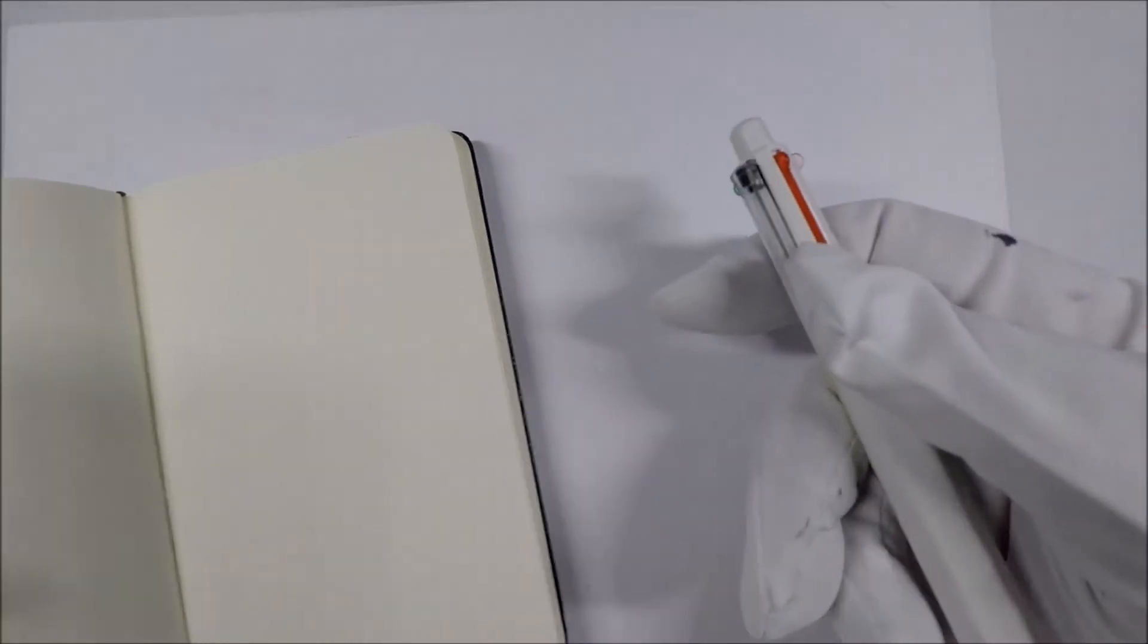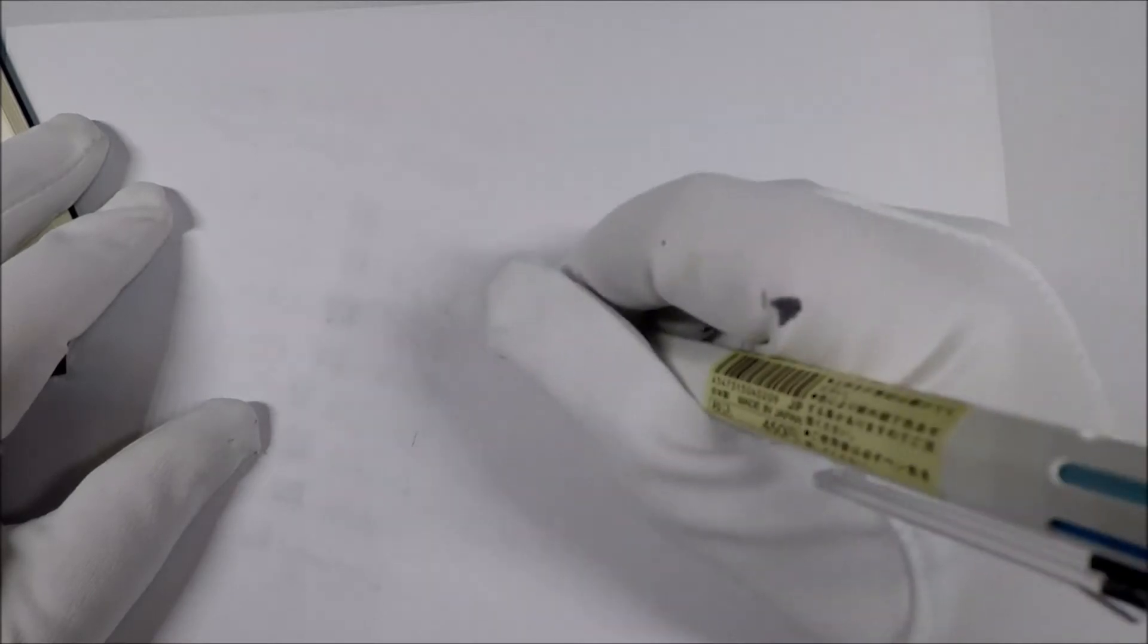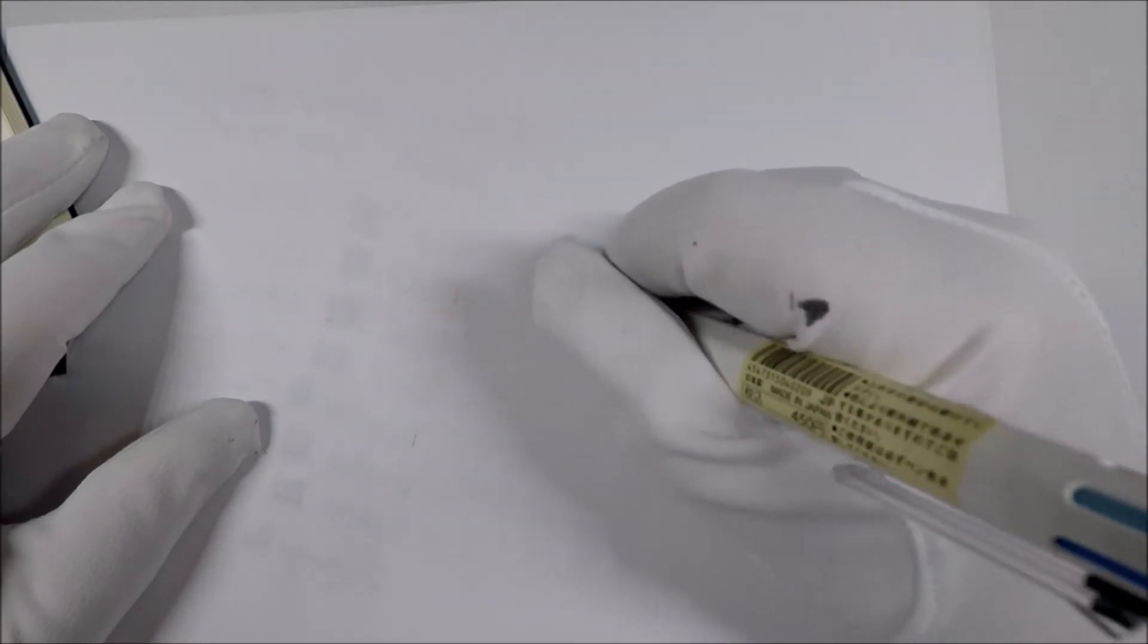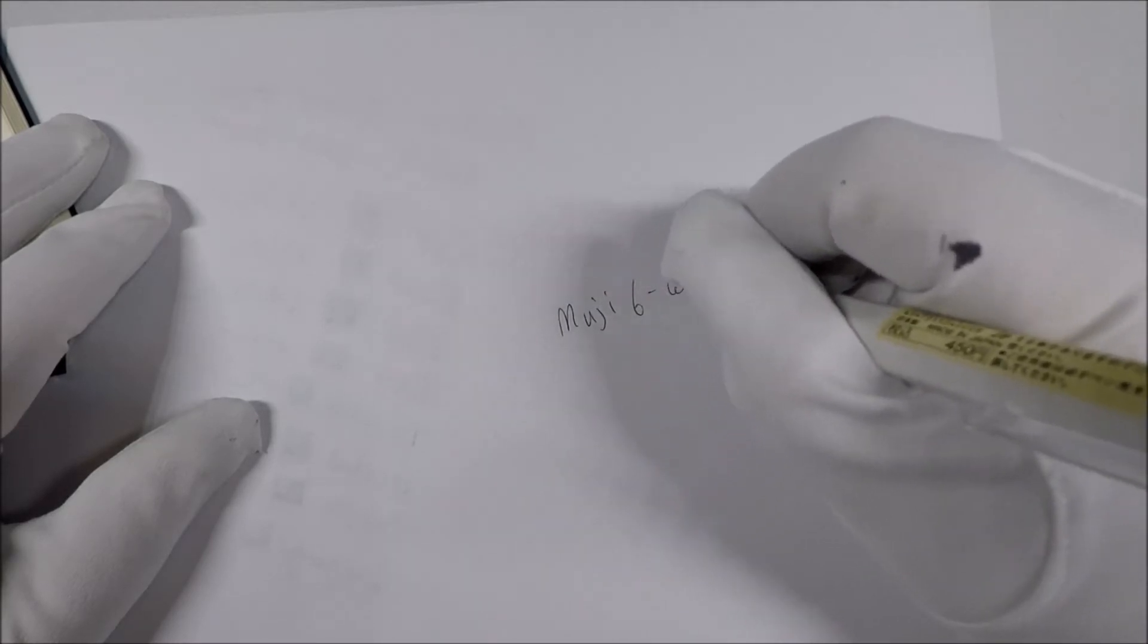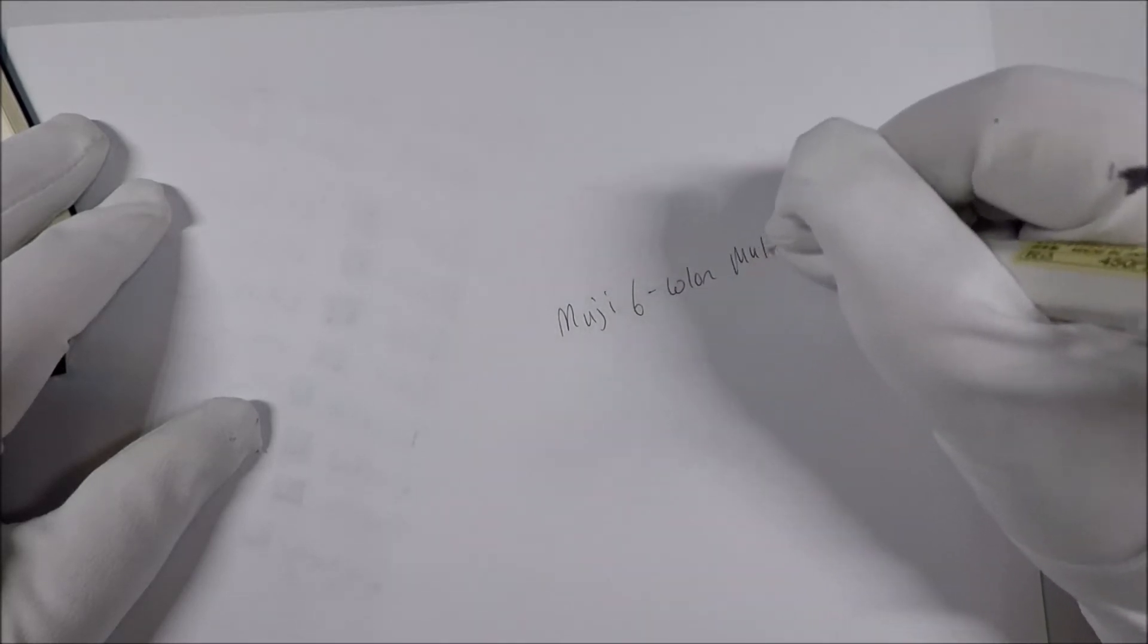And I'll try out the ink on normal printer paper. And we'll also try out the ink in a Moleskine journal. And we'll see how it looks with the white paper versus the cream color paper of the Moleskine journals. Alright. So let's see. Let's try this out. And this is the M-U-J-I, the Muji, six color multi-pin.